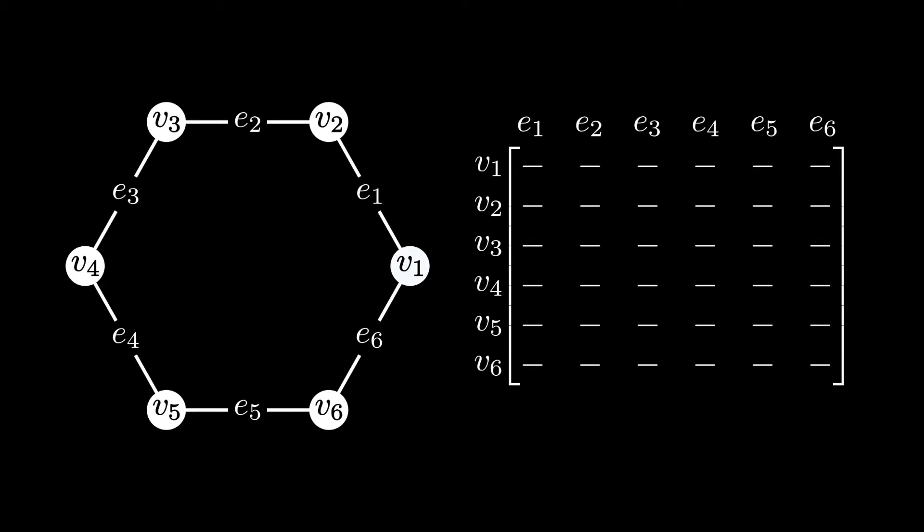For example, if we look at the very first entry, we ask ourselves, is v1 incident to e1 in our graph? And since it is, then we're going to put a 1 in for this entry.